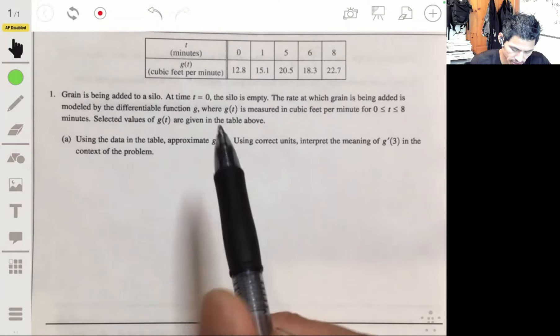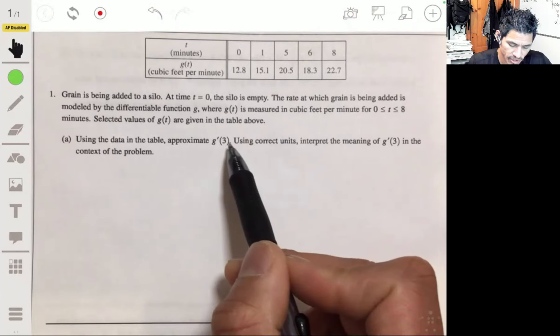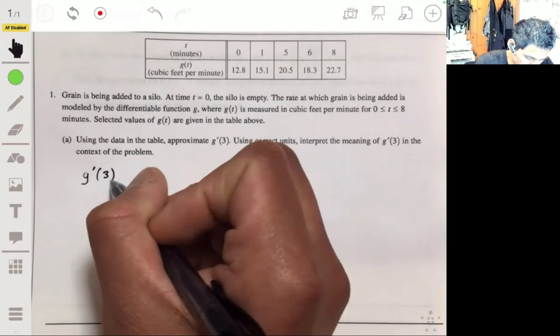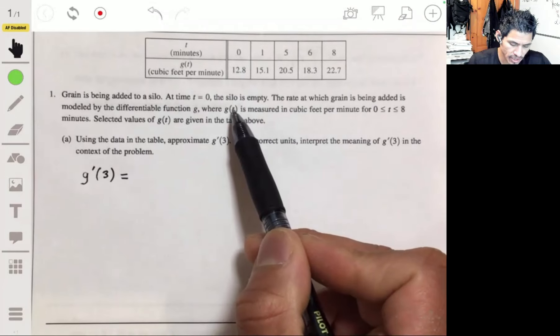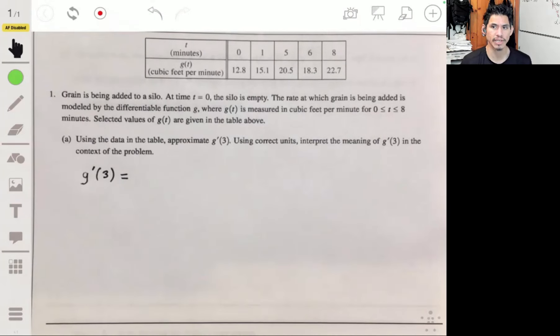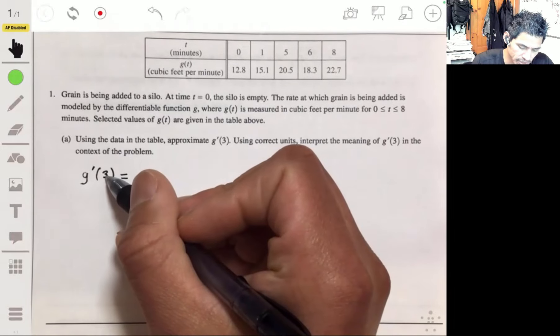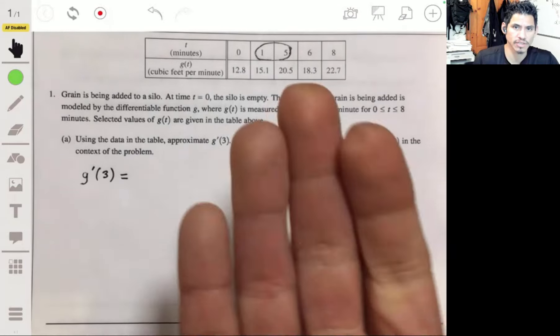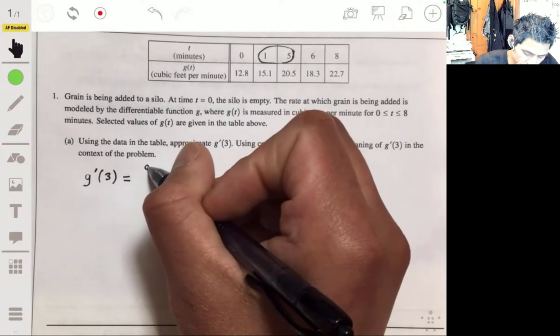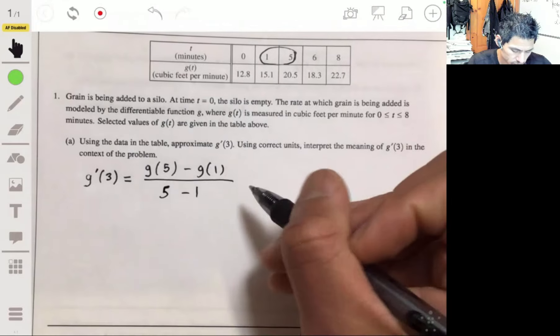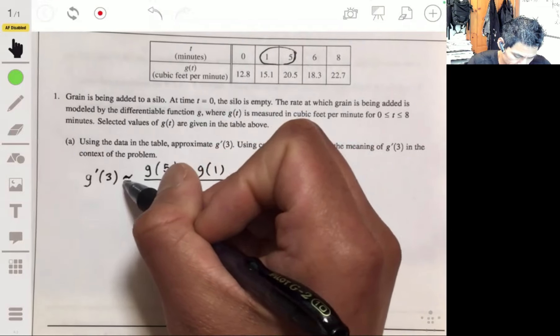All right, so then g prime of three is just basically asking for the derivative at three for g of t. So g prime of three would be equal to the derivative at three, except we're not just given the equation for g of t. So because of that, then we have to remember what the derivative equation or what it means in general. And that's that it's the rate of change. It's the rate of change at this particular time. Now, since three is between one and five, we're essentially just going to use those to calculate or get an approximation of g prime of three.